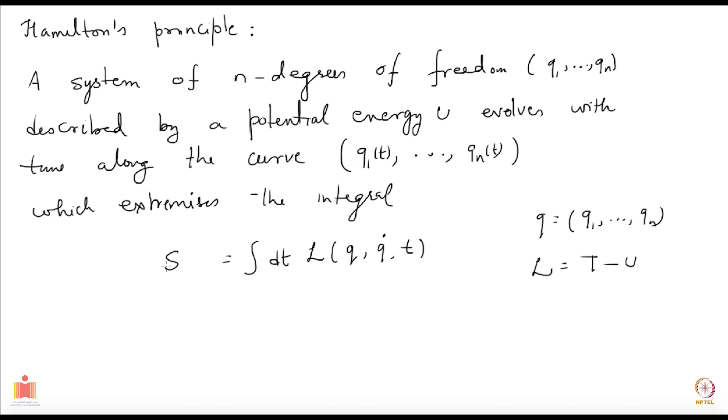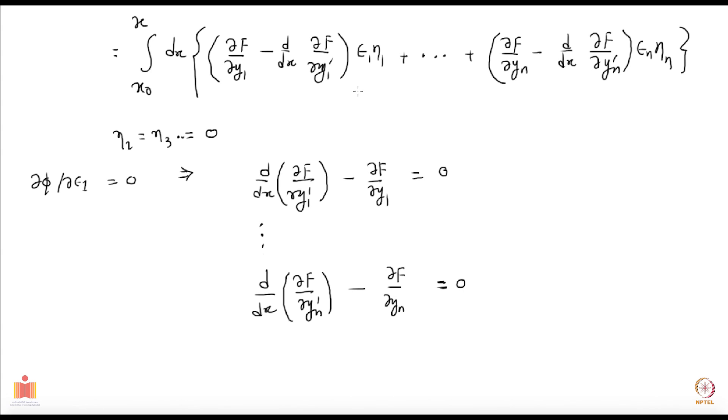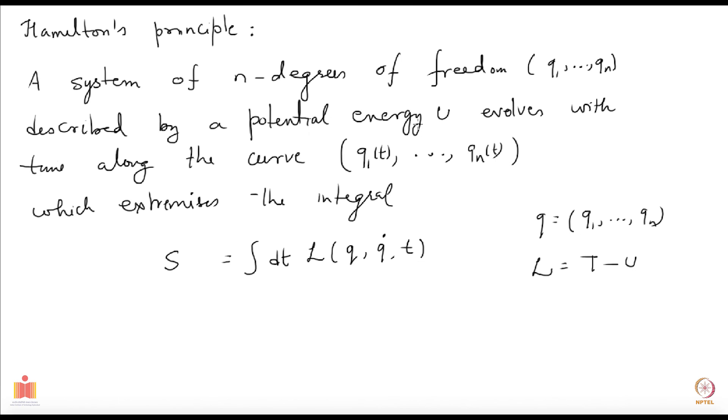Also note that in this derivation here, we assume that the f was a function of x, ys and y primes. Here L will be a function of q, q dots and t and if I allow u, the internal energy to be a function of t, q and q dots, generalized velocities, the derivation will still go through. I mean we can allow for u to depend on generalized velocities also and it can also explicitly depend on time and this will still go through. This is one generalization that is possible.